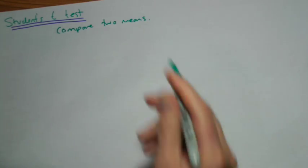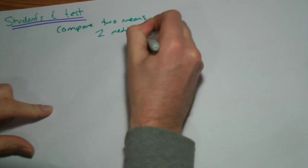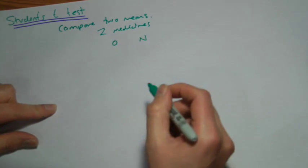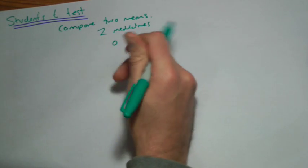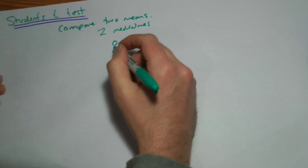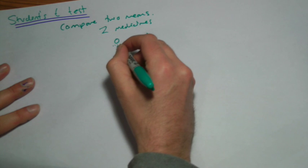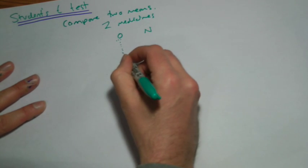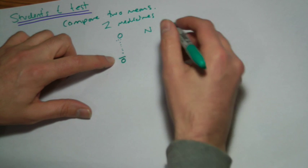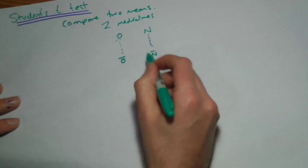Why would we want to do that? To give you a straightforward example, let's say we were testing two medicines — the old medicine, we call it O, and the new medicine, N. It's a medicine that makes you grow more hair on the top of your head, a cure for baldness. We measure how many new hairs you get, so we've got all these samples of people, and we end up with a mean value for how many hairs grow. We get a mean value for the new medicine too, and we want to say: is the new medicine better than the old medicine?